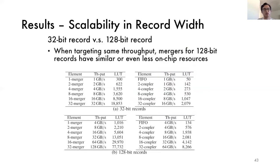We also measure the scalability in record width of our design by comparing the 32-bit record and the 16-byte records. We find that when targeting the same throughput, mergers for 16-byte records have very similar or even less on-chip resources, which indicates our designs have good scalability for different record width.